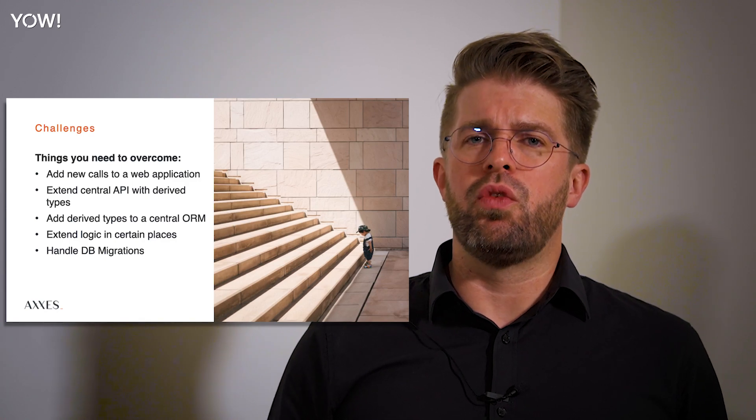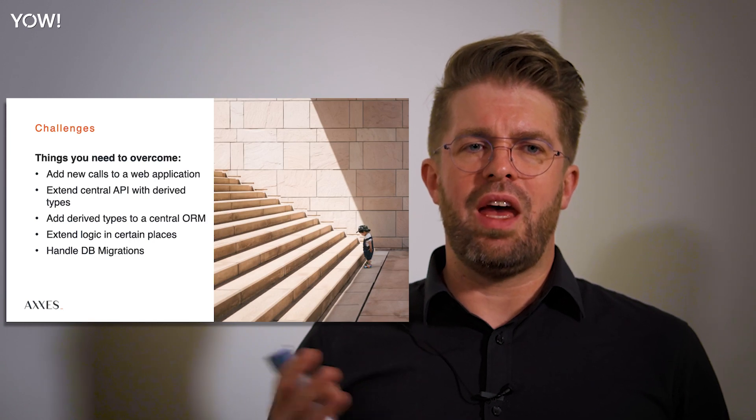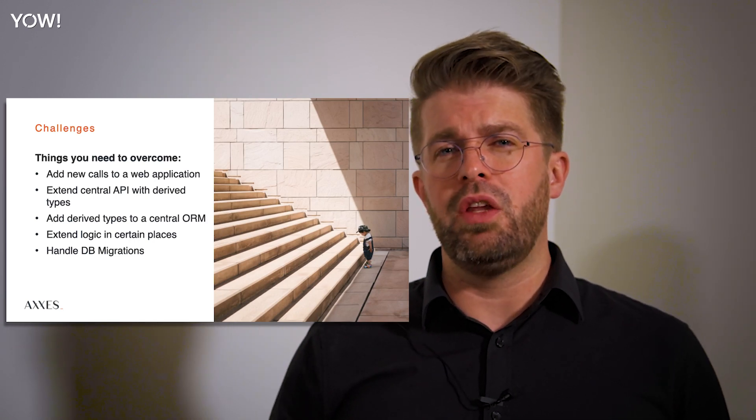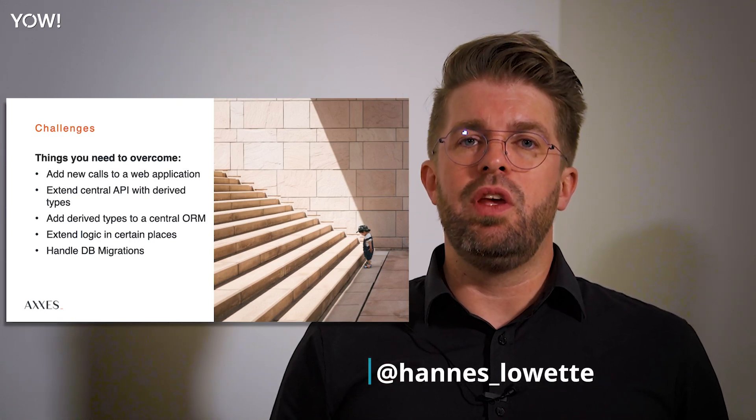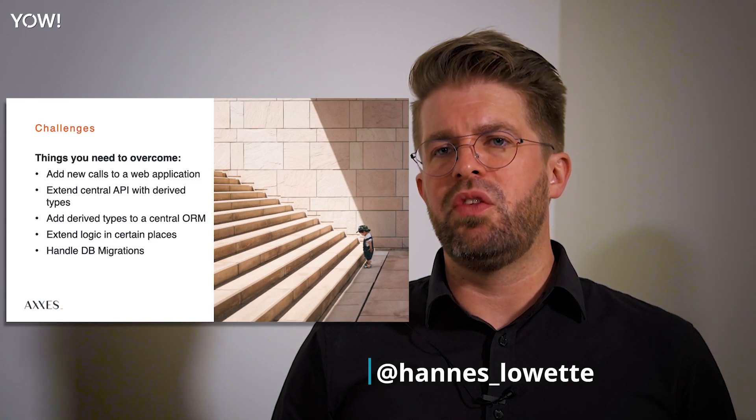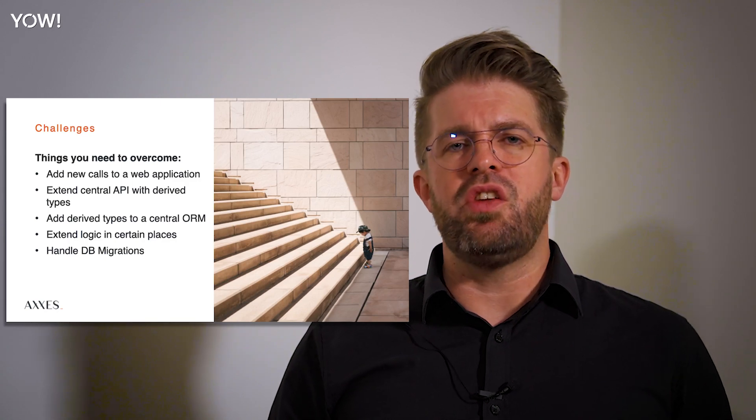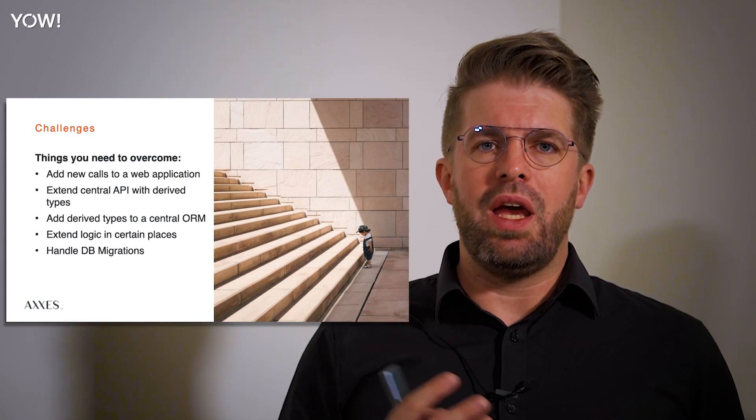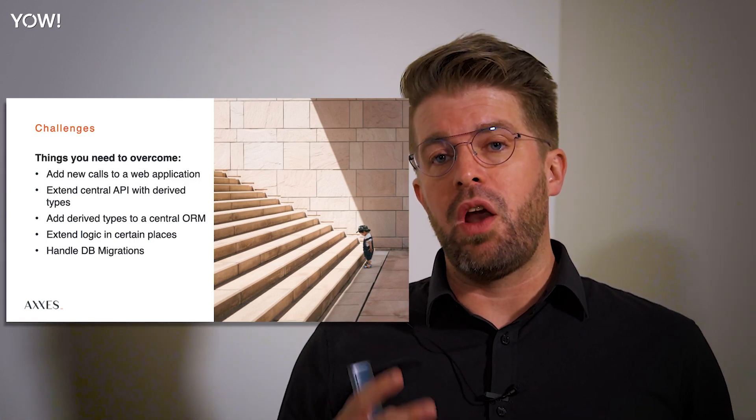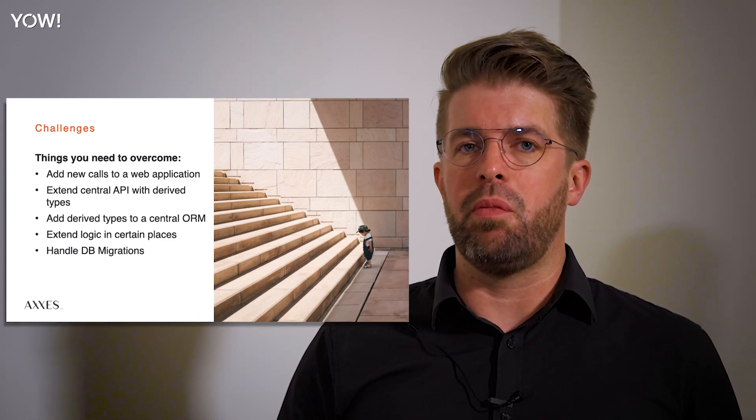When you do this there's a couple of challenges you are going to need to overcome. You have a central UI in your monolith—you're going to need to add extra API calls or extra views to that, so you're going to need to find a mechanism to make that work. Your central API may need to deal with derived types which means that you need to deal with polymorphic deserialization, but also extension points for the logic in the central API. You also need to handle the way that it talks to your database because that also needs to know about certain derived types, add extra fields, and handle the migrations on the database side.